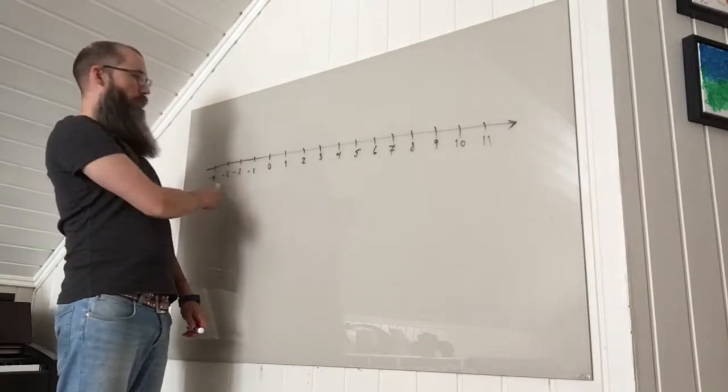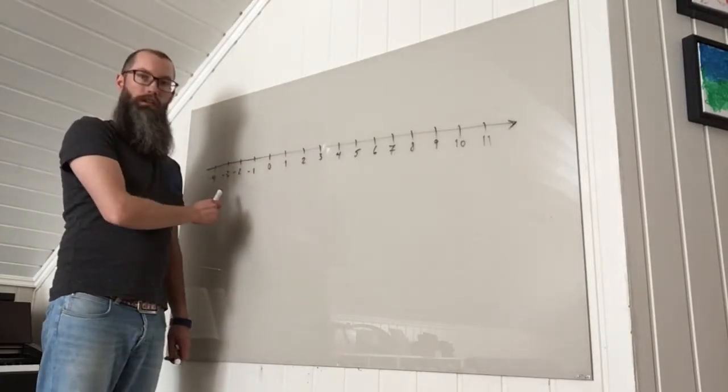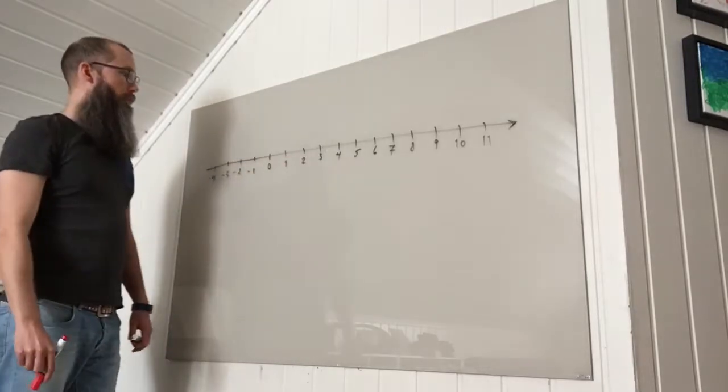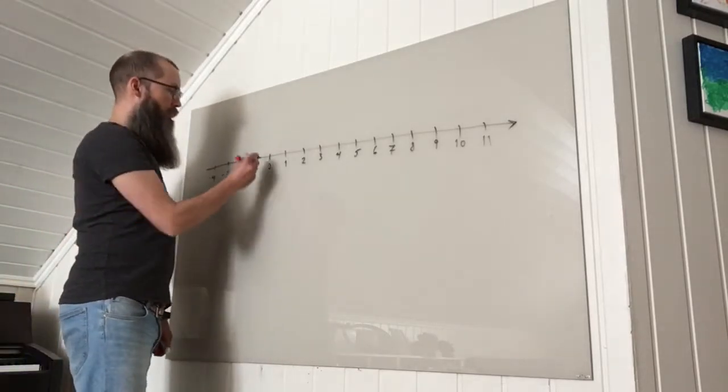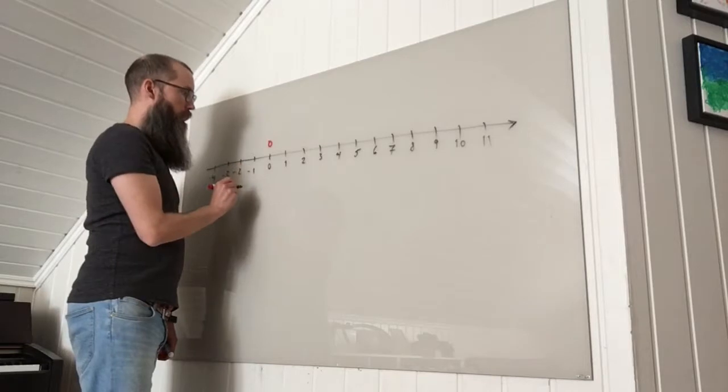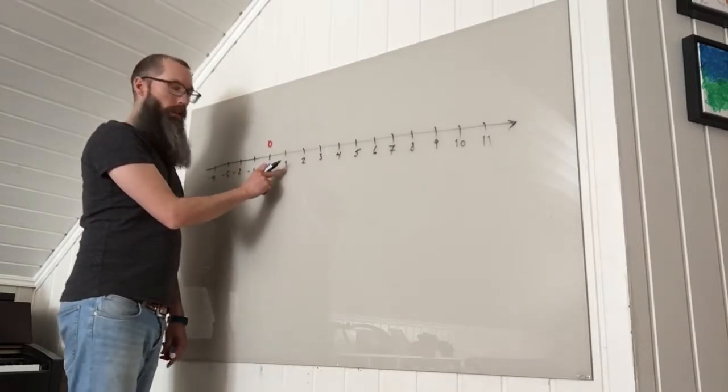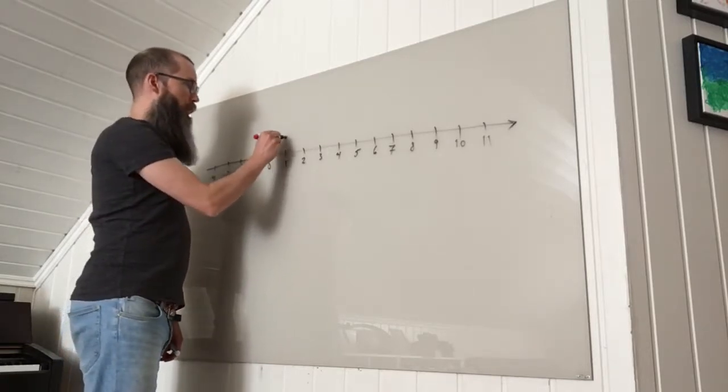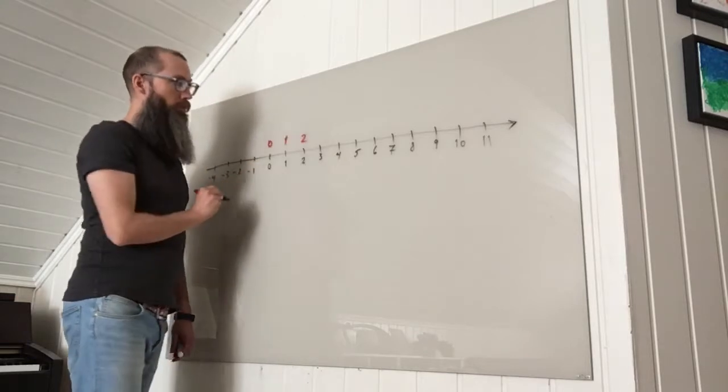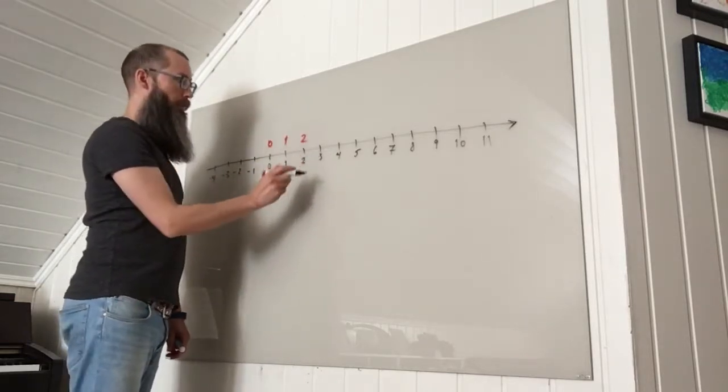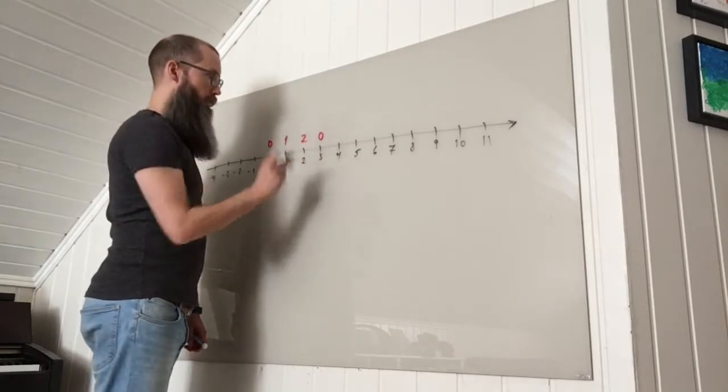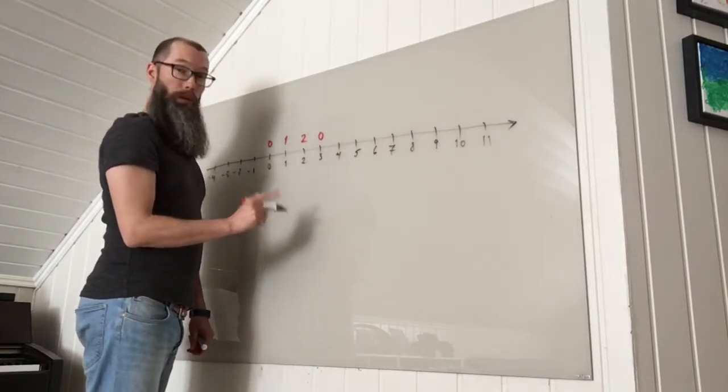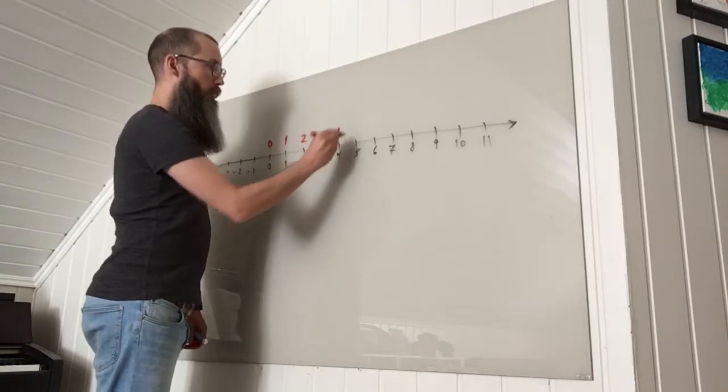So first I'm going to divide all of these integers on this number line by 3 and see what remainders are. So 0 divided by 3 is 0. 1 divided by 3 gives a remainder of 1 and then a remainder of 2. 3 divided by 3 is 1 with 0 remainder. 4 divided by 3 is 1 with 1 as remainder and so on.